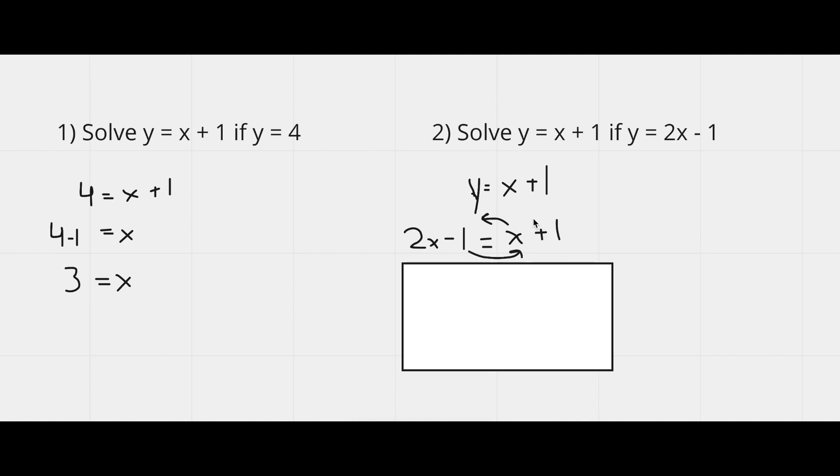So we move the one to the other side. That leaves us with two x minus x equals one plus one. And that simplifies to x equals two.